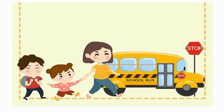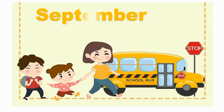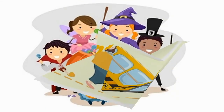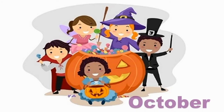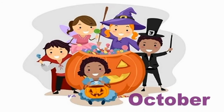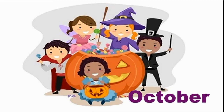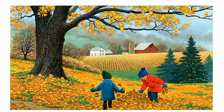In September, school starts again — back to school! Autumn begins; days get shorter and colder. In October, days continue to be shorter and colder. Some people celebrate Halloween by dressing up in costumes and going door to door asking for candy. In November, the days keep getting colder and shorter. Sometimes it even snows. Leaves start to fall down and turn yellow.